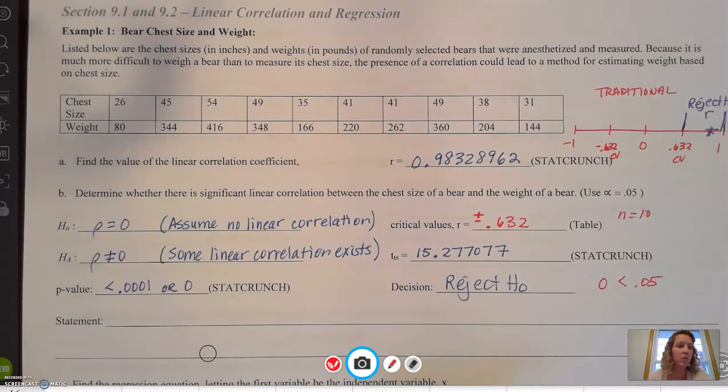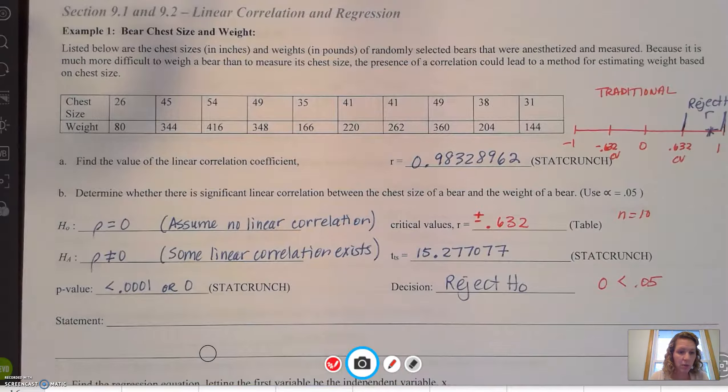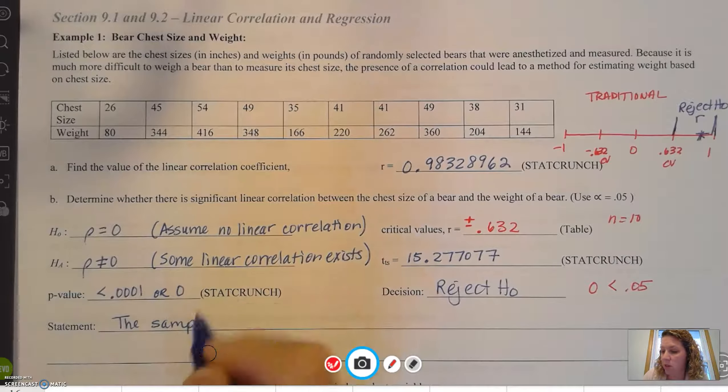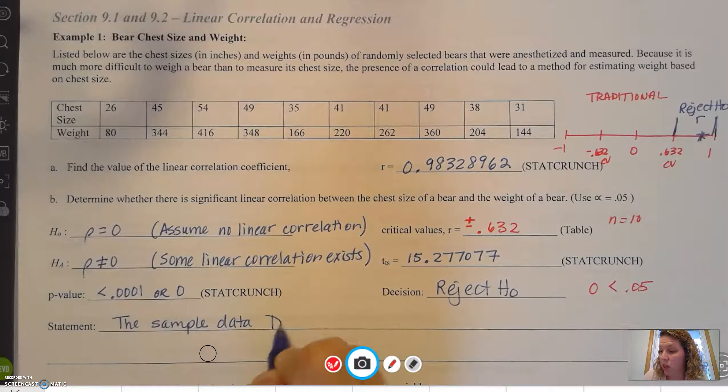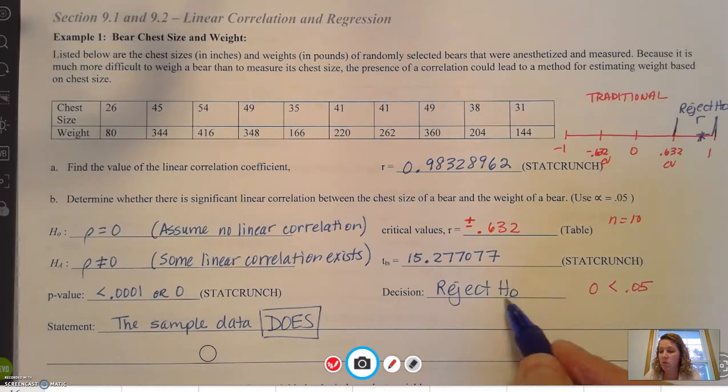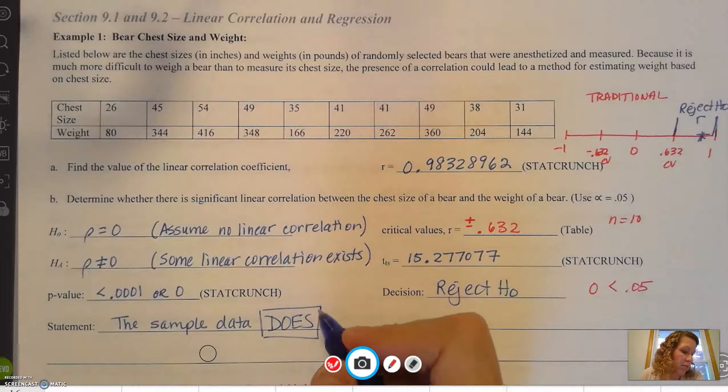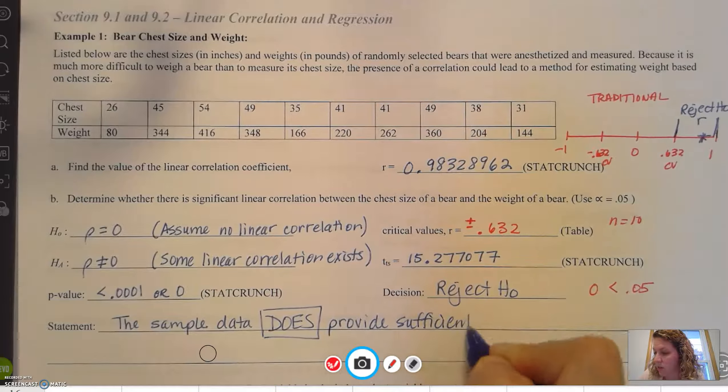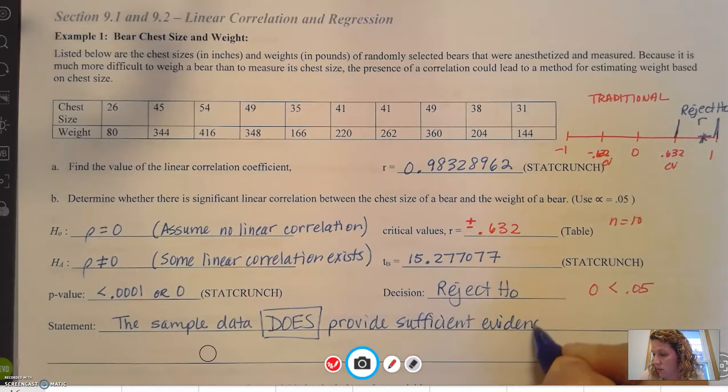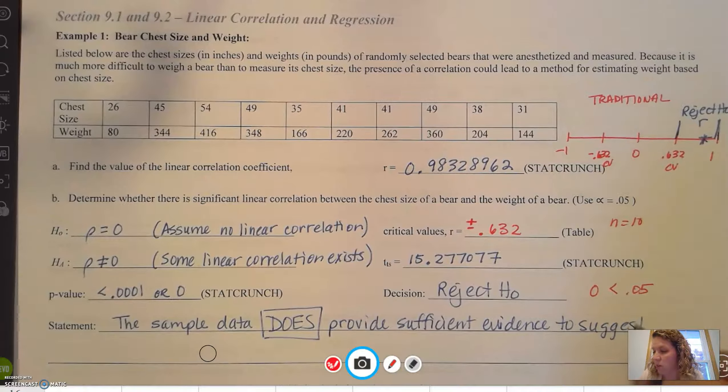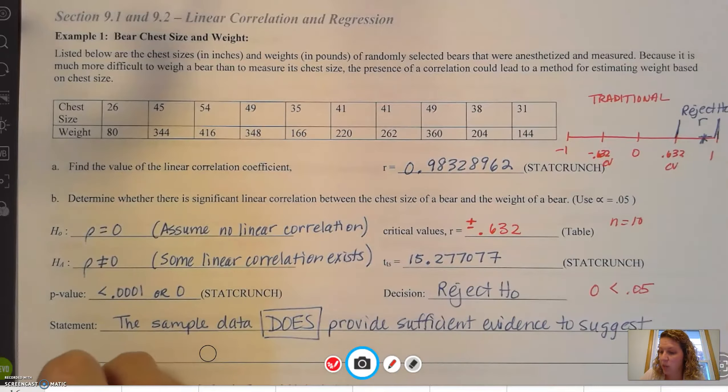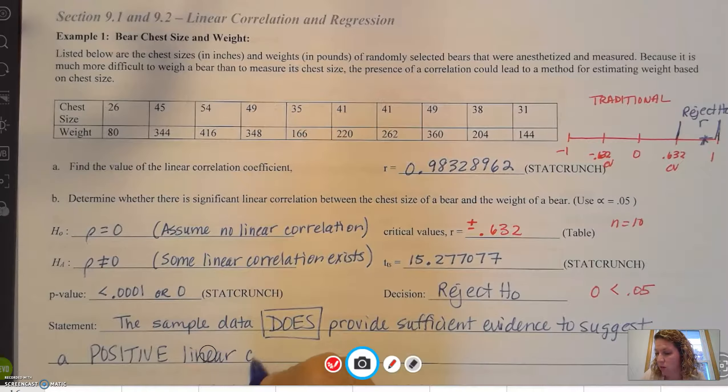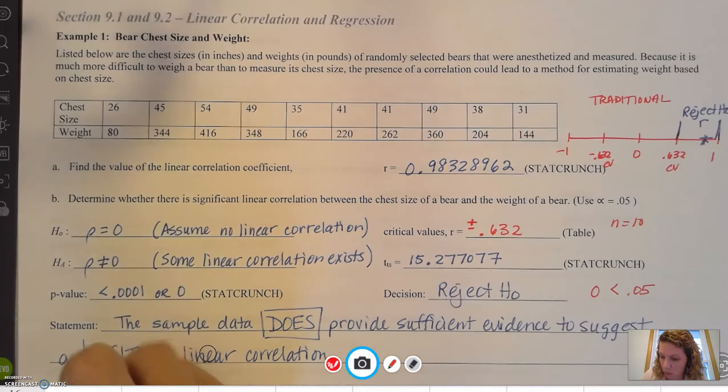Okay, so now our statement. According to our statement, we're going to say the following. The sample data, because remember, the sample is just those 10 bears. We're going to use the word does, because we've rejected it. It does provide sufficient evidence to suggest, now what type of linear correlation? A positive linear correlation.